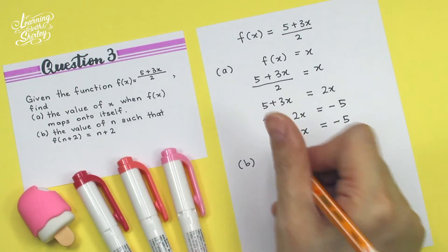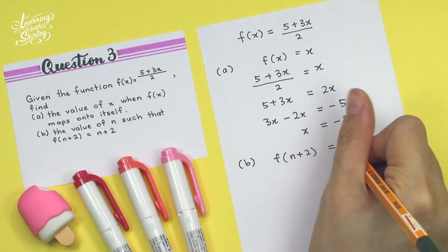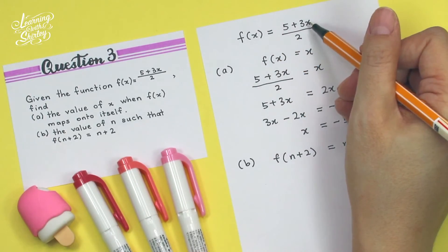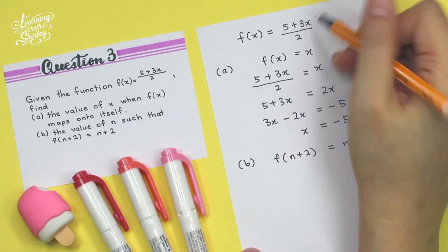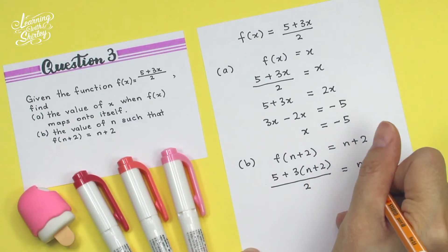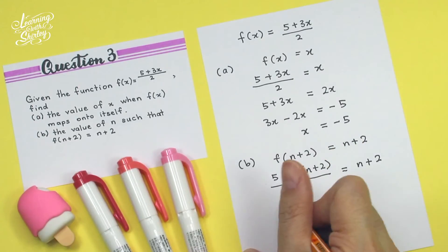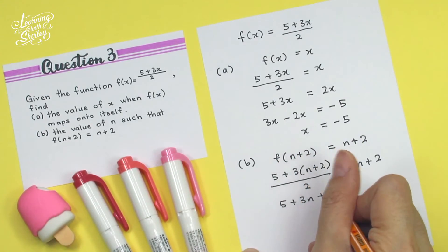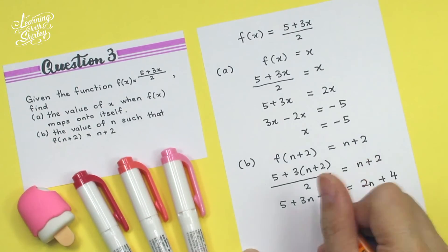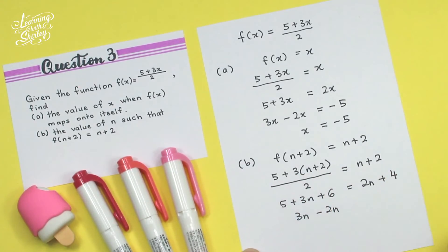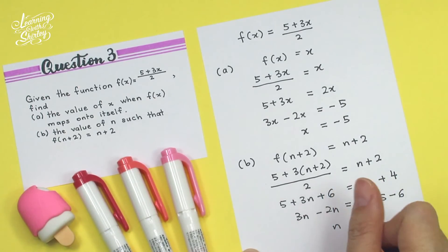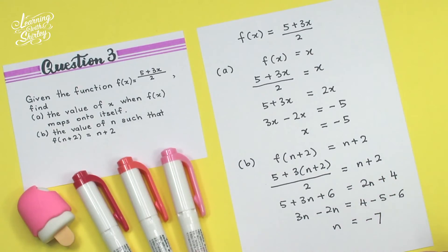For B, find the value of N such that F(N plus 2) equals N plus 2. Looking back at the function, when X is inside the bracket here will be X, so when it's N plus 2 inside the bracket, here will be N plus 2. So: (5 plus 3(N plus 2)) over 2 equals N plus 2. Expanding: 5 plus 3N plus 6, bringing over the 2 to multiply: equals 2N plus 4. Rearranging: 3N minus 2N equals 4 minus 5 minus 6. So N equals negative 7.